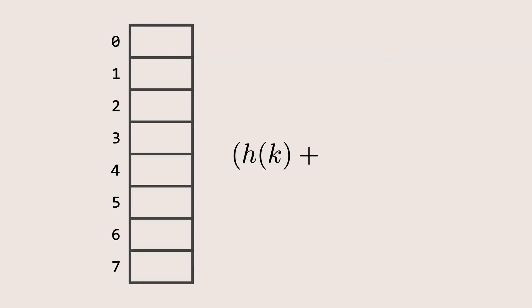In quadratic probing, instead of searching for an empty slot in a straight line, we search in a quadratic pattern. The formula is similar to the one we used earlier, but here we use i squared instead of just i. Here, we have an element with the key 1. If we take the modulo 8 of it, we get 1. So let's insert it at the first index.